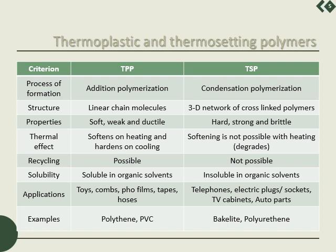Thermoplastics are generally soluble in organic solvents, whereas thermosets are not. From the application point of view, toys, combs, photo films, tapes, and hoses are made up of thermoplastic polymers, whereas telephone cabinets, TV cabinets, electric plugs, sockets, and auto parts are made up of thermosetting polymers. Examples: polythene and PVC are thermoplastics, whereas bakelite and polyurethane are examples of thermosetting polymers.